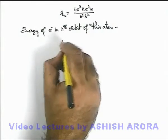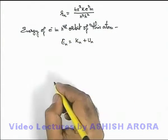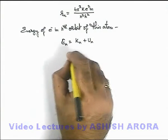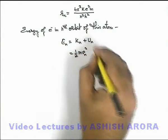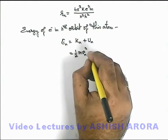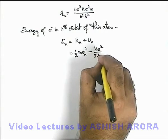Energy in nth orbit will be kinetic energy in nth orbit plus potential energy in nth orbit. Kinetic energy we can write as half m v n square, and potential energy is already given in the problem as minus k e square by 3 r n cube.